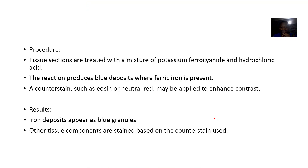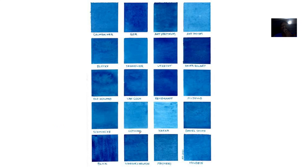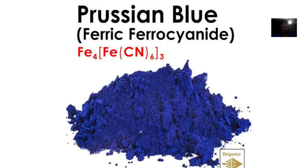In anemia investigations, it helps detect iron deficiency anemia or abnormal iron metabolism. For the procedure, tissues are treated with a mixture of potassium ferrocyanide and hydrochloric acid. If blue color is formed, iron deposits exist. A counterstain such as eosin or neutral red may be applied to enhance contrast. Iron deposits appear as blue granules, while other tissue components are stained by the counterstain.